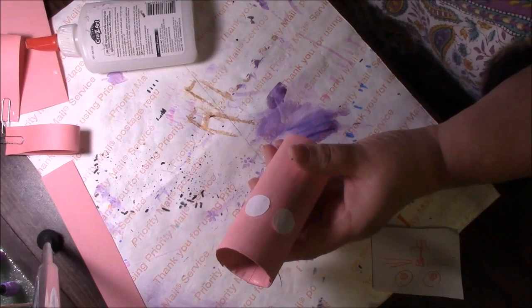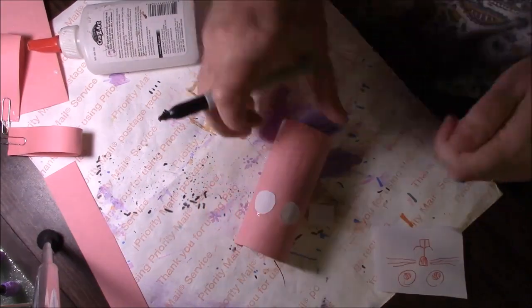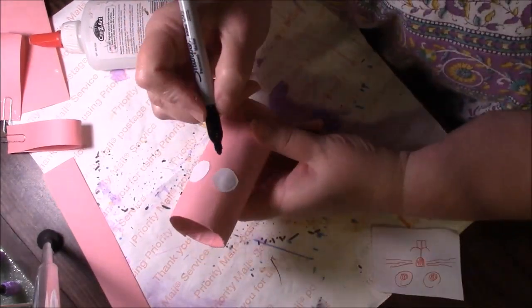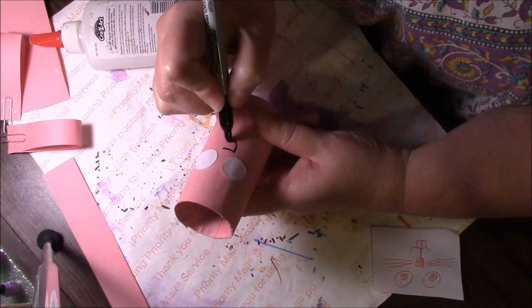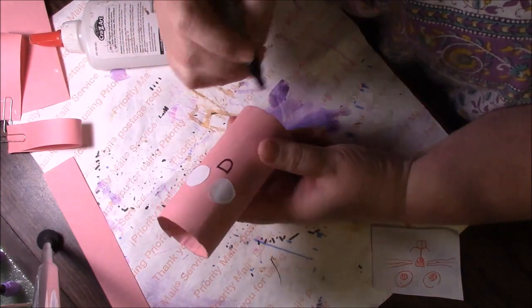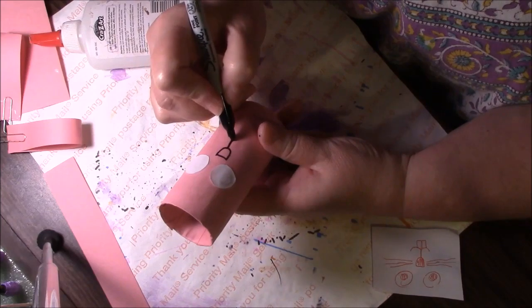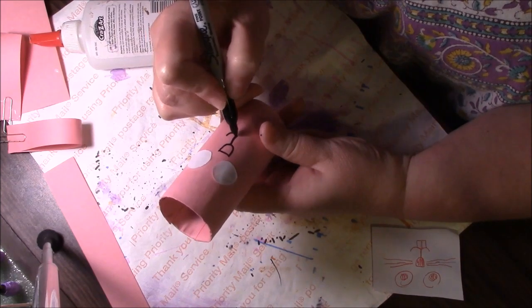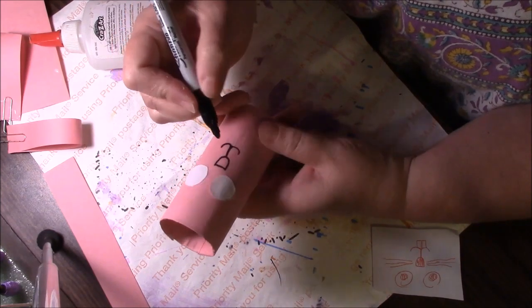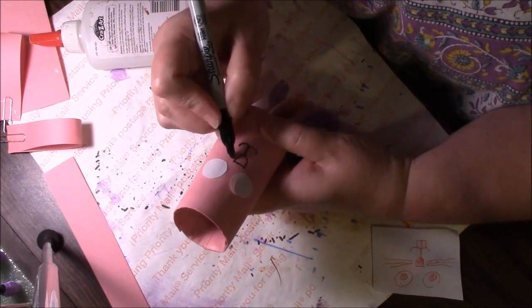While that's drying, I am going to draw the nose. I'm going to outline it with black but I'm going to leave the nose pink, and then down, and then like a little W here. Let's do some whiskers.